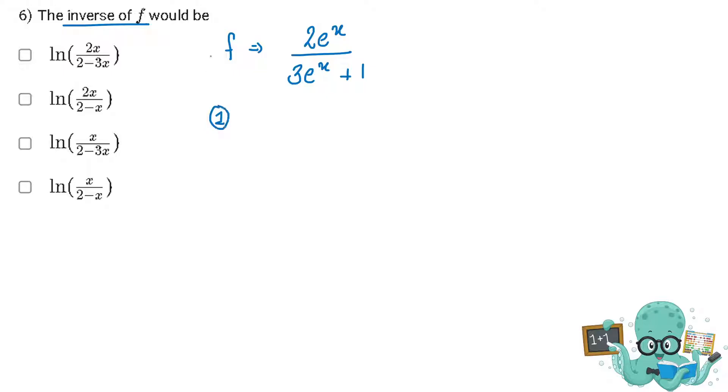The first step is to write the function, which we write as f of y. The second step is to replace y with x and x with y. So where y is, write x, and where x is, write y. The third step is to find the value of y. This y is the f inverse x.